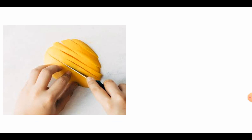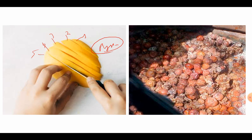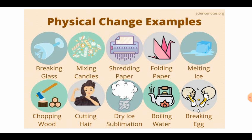Let us understand one more example. When we cut fruits, every piece has the same nature and identity — though we cut it, the nature and identity remains the same, so it is a physical change. But if we leave fruits for some time, they start getting decomposed: the fermentation process starts and alcohol is formed. The sugar present in the fruits changes into alcohol. So this fermentation process is a chemical change, and the process which involves a chemical change is a chemical reaction.